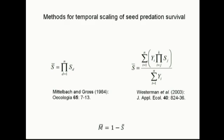Once we had data on seed predation from sequential point estimates performed on a weekly basis throughout the three-month period, or direct estimates made during that entire period, we wanted to convert the point estimates to single rates describing seed survival of post-dispersal predation during the three-month time period. This value is referred to as S-bar. There are two published models for doing this. The Mittelbach and Gross approximation was developed to describe seed losses to predators at a daily time step, assuming continuous seed exposure to predators with daily seed survival rates S-sub-D compounded over the larger time step to yield S-bar.